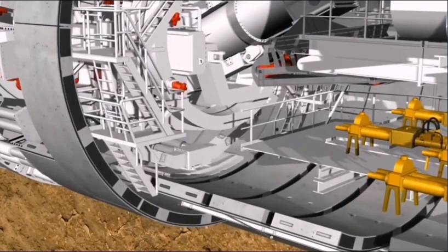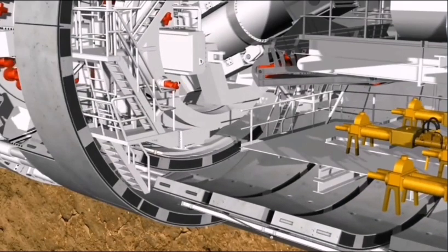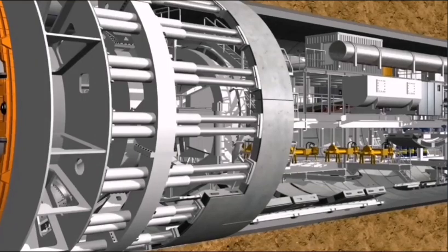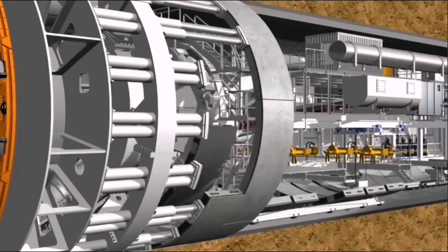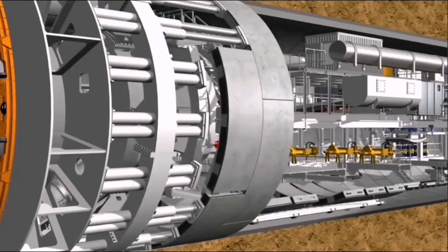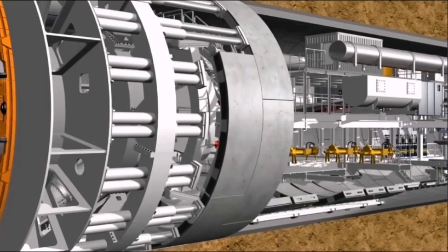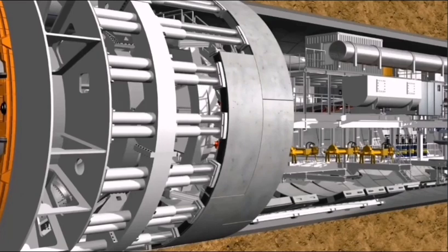The erector lifts the stone from the segment feeder. The hydraulic cylinders are then retracted from the corresponding installation point. The segment is positioned precisely, holding side contact next to the previous installed ring, using a remote control. Now the hydraulic cylinders are extended again to secure the segment in its position and to subsequently bolt it into the previous ring.